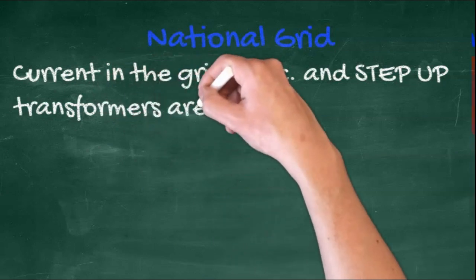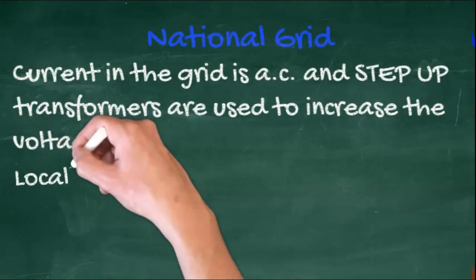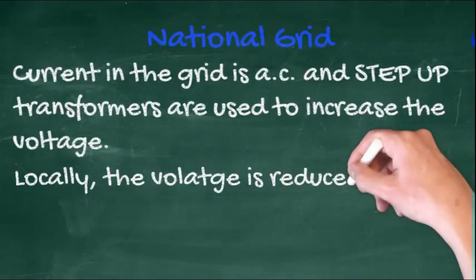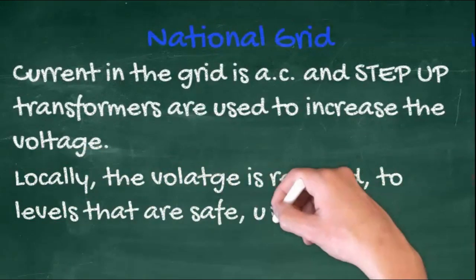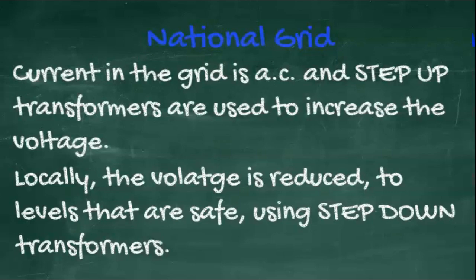Current in the grid is AC alternating. And step-up transformers are used to increase the voltage. Locally, the voltage is again reduced to levels that are safe using step-down transformers.